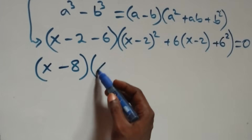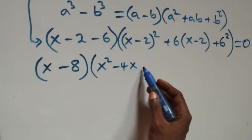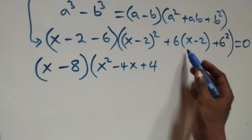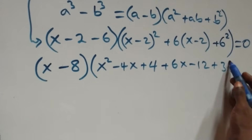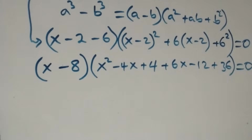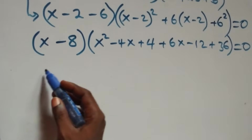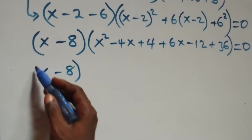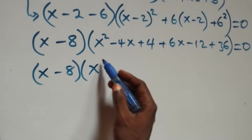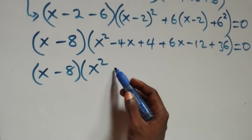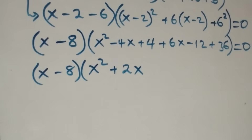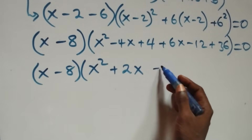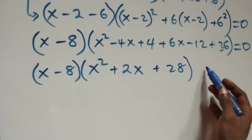Open brackets: the expansion gives us x squared minus 4x, then plus 4, and opening the 6 bracket we have plus 6x minus 12, then plus 6 squared as 36, close bracket, equals to zero. This becomes x minus 8 into brackets, open brackets: x squared, then 6x minus 4x gives plus 2x, and 36 minus 12 gives 24, then 24 plus 4 gives 28, close brackets, equals to zero.